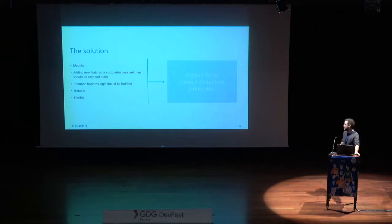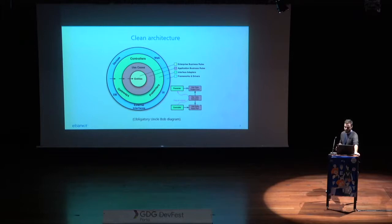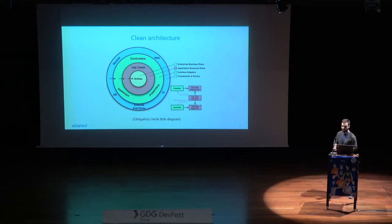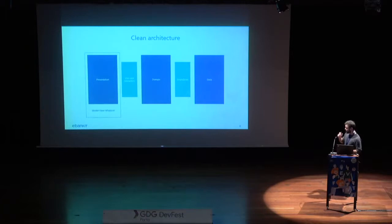After looking around for solutions, we turned to the good old clean architecture. Most of you in the Android community should be familiar with it — it's not a new concept. For those who don't know, clean architecture is basically a way of separating your software into layers so you can create a system that is intrinsically testable, with a clear separation of concerns, and where you can easily replace elements that are external to the core logic. With all due respect to Robert Martin, the creator of this architecture, I think his diagram is a little bit hard to understand.